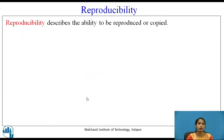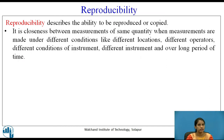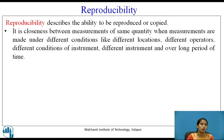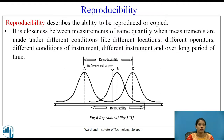Reproducibility describes the ability to be reproduced or copied. It is closeness between measurements of the same quantity when measurements are made under different conditions — like different locations, different operators, different conditions of the instrument, different instruments, and over a long period of time. Figure 6 shows reproducibility, illustrating the difference between repeatability and reproducibility with a reference value line.